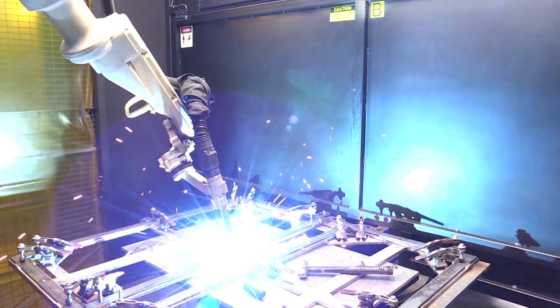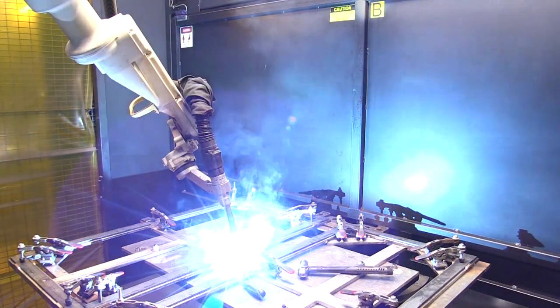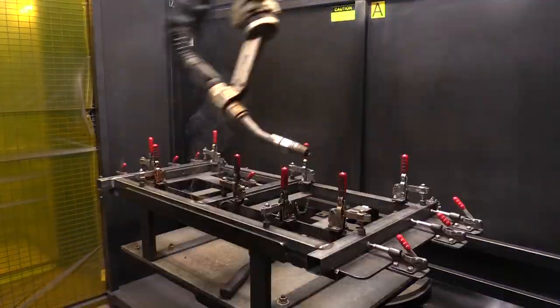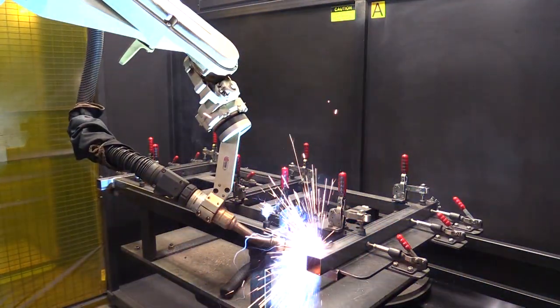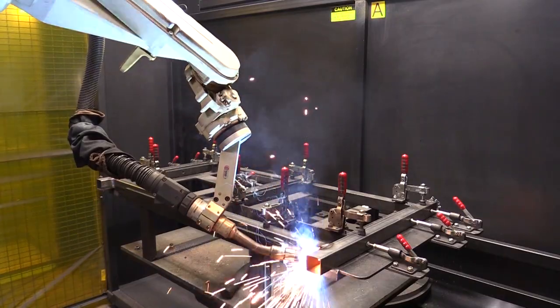O.W. Lee utilizes two robotic welders for simpler and high-volume items. These robotic welders allow O.W. Lee to achieve the highest level of accuracy in mere seconds.